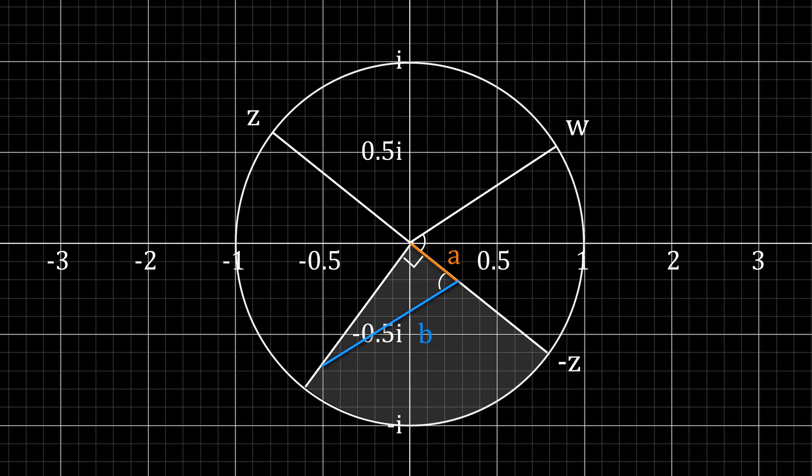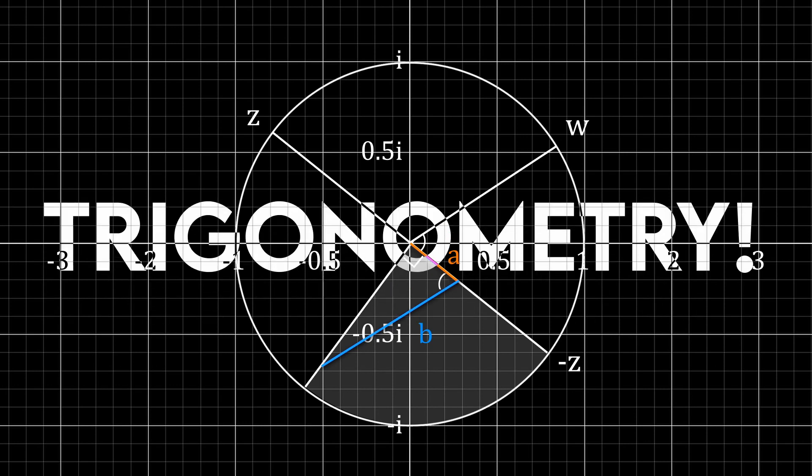A right angle triangle, an angle, two sides? That screams trigonometry, doesn't it?